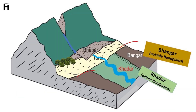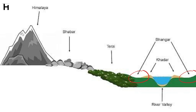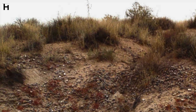Bangar is the largest part of the Northern Plain. The soil in this region is not renewed frequently. It is the old alluvial soil found in raised areas that are away from the river channels. It is not very fertile and contains calcareous deposits locally known as Kankar.